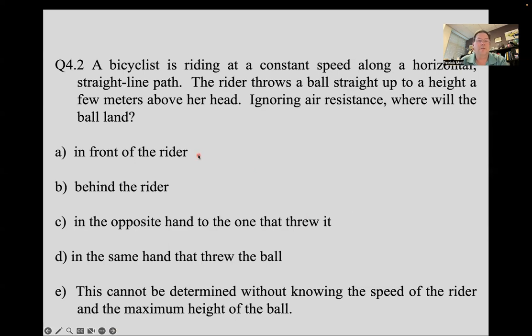Where is the ball going to land? It's going to be in front of you, behind you, in the opposite hand to the one you threw it. In the same hand you threw the ball, or it cannot be determined without knowing the speed of the rider and the maximum height of the ball.